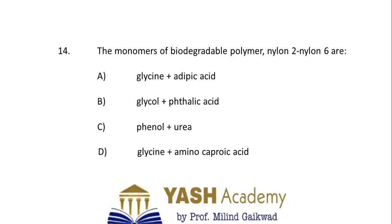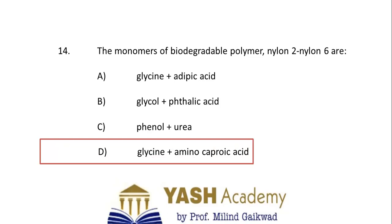Fourteenth question: the monomers of biodegradable polymer Nylon-2 and Nylon-6 are — A. Glycine + adipic acid, B. Glycol + phthalic acid, C. Phenol and urea, or D. Glycine and epsilon-aminocaproic acid (caprolactam). Nylon-2 monomer contains two carbon atoms and Nylon-6 monomer contains six carbon atoms. The correct answer is D: glycine plus epsilon-aminocaproic acid.